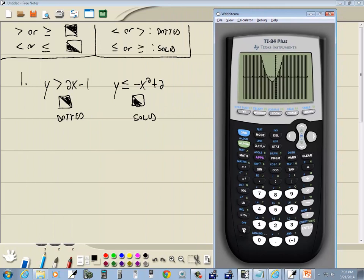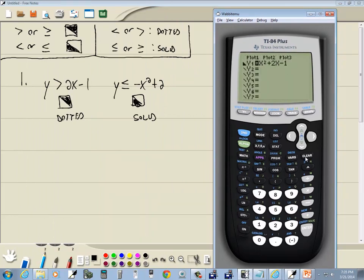So we'll come here, press y equals, clear. Now put in 2x minus 1. Now we want to go clear to the left and put your flashing cursor on this first slash. And we'll press enter one time, makes it a thick slash. One more time makes it an upper right-hand triangle, which is what we want.